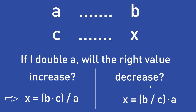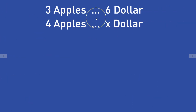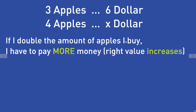Let's take a look at our example again. The first thing I have to do is ask myself: if I increase or double the amount of apples — the left value — will the right value, the money I have to spend, increase or decrease? It will increase, because the more apples I buy, the more money I have to spend. So if I double the amount of apples, the right value here will increase.